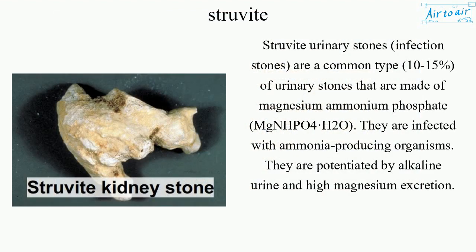Struvite urinary stones, also called infection stones, are a common type — 10 to 15 percent — of urinary stones that are made of magnesium ammonium phosphate, MgNH4PO4·H2O. They are infected with ammonia-producing organisms, potentiated by alkaline urine and high magnesium excretion.